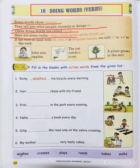Here are some verbs: skip, climb, grow, write, brush, go. These verbs show actions. When we are skipping — that is an action. Climbing, growing, writing, brushing — all of these are actions. So all action words are called verbs.